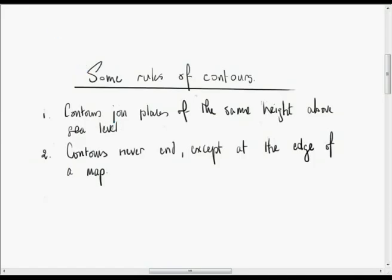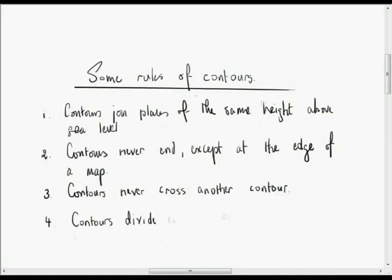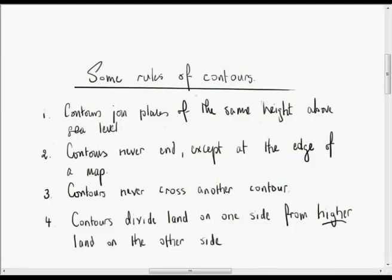The third one is that contours never cross another contour. The fourth one is that contours divide land that is lower than them on one side from land that is higher than them on the other side.